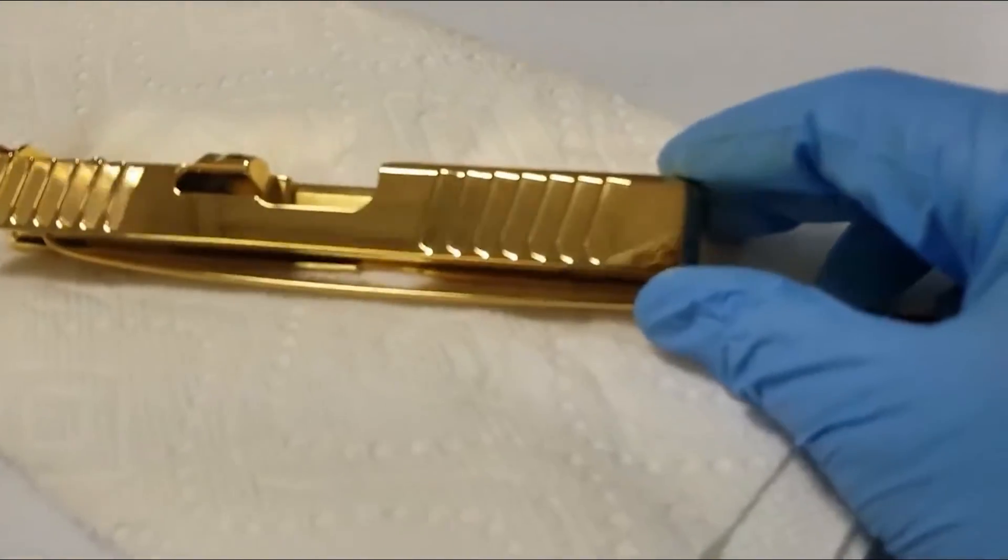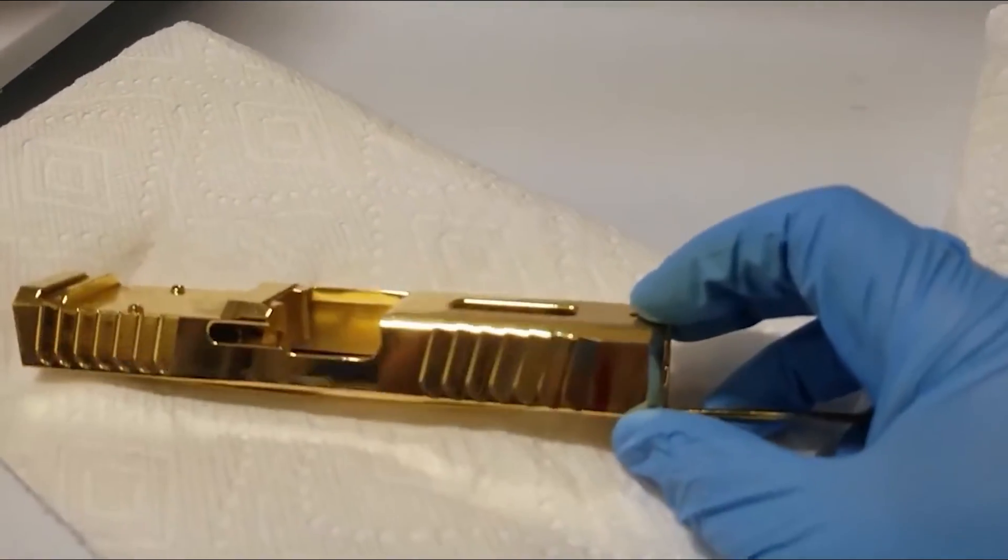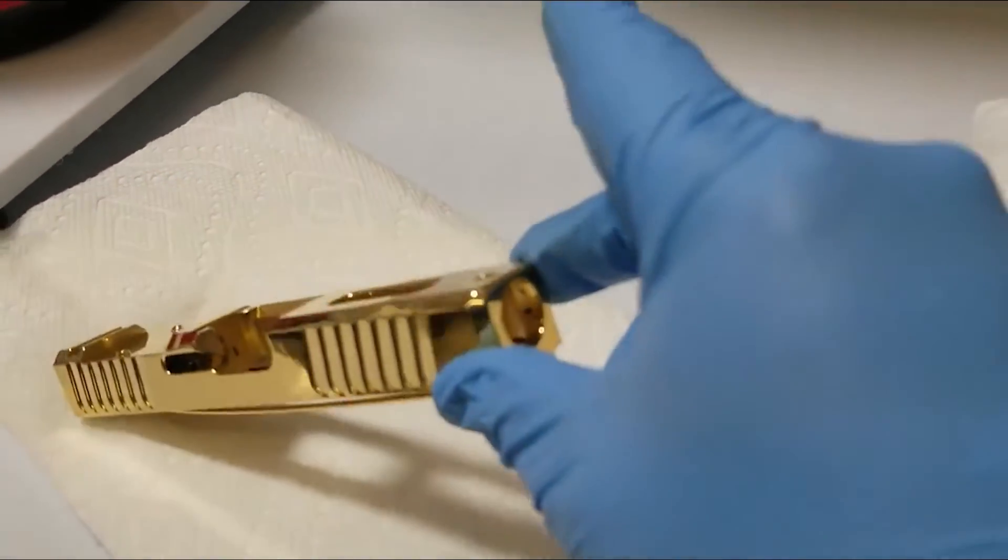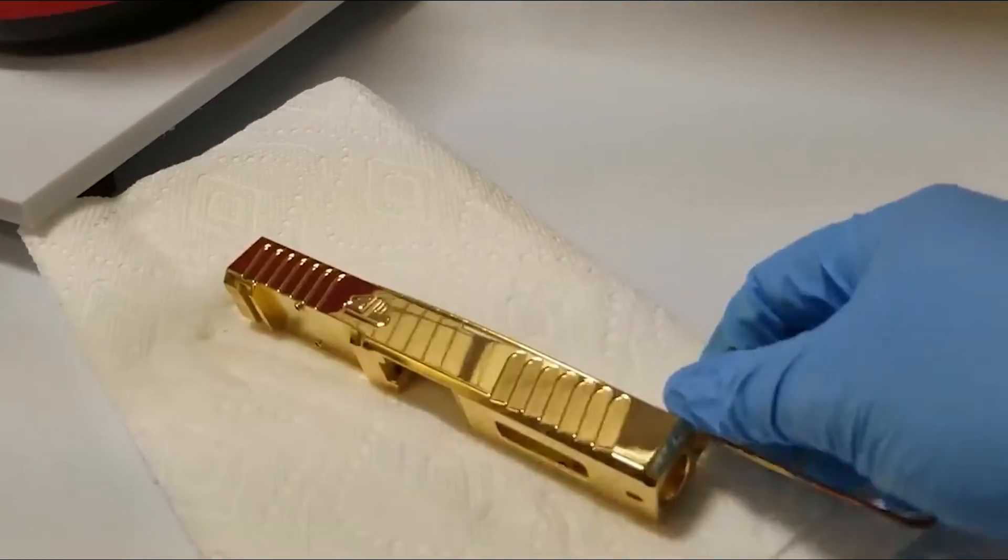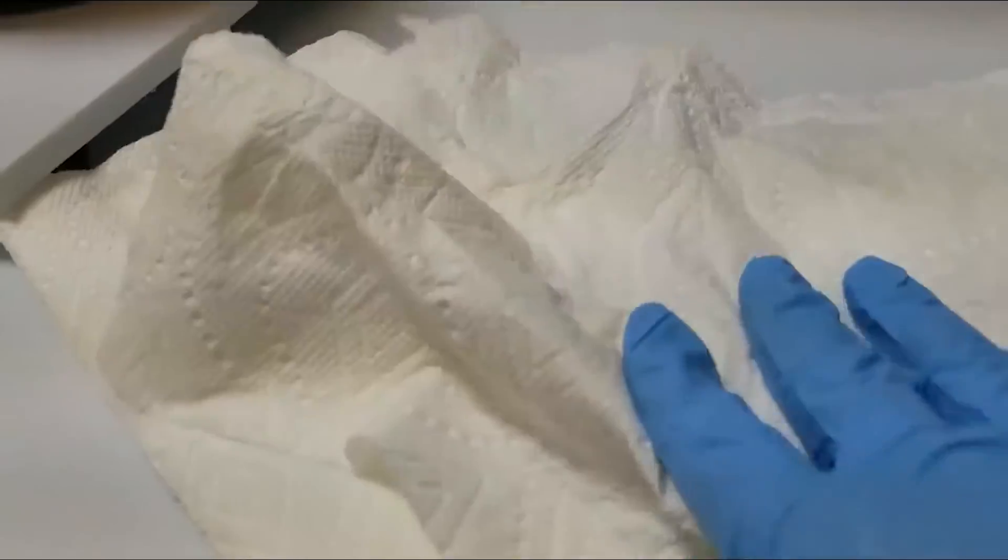It is important to keep in mind the tolerance of items that you are plating. Applying either bright acid copper or bright nickel can build metallic thickness and change the dimensions of your piece. This is particularly crucial for guns and machined parts.